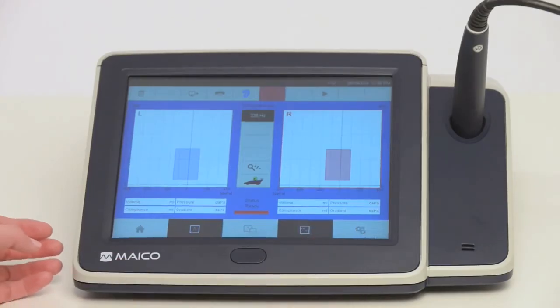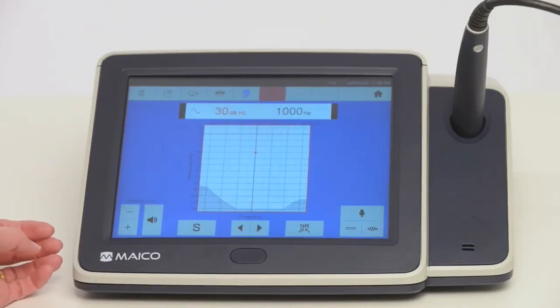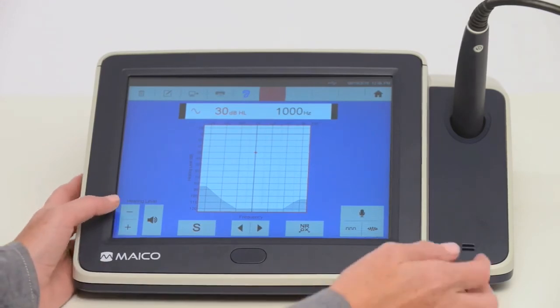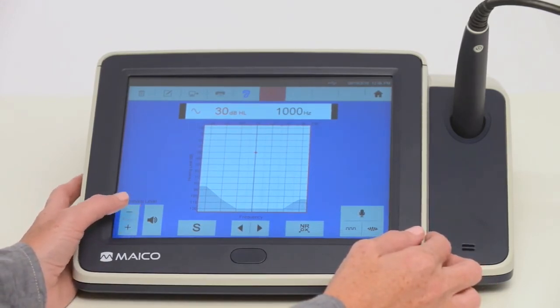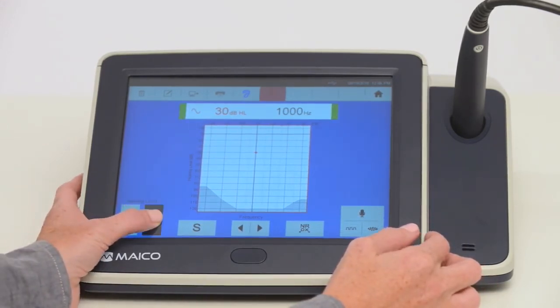Using the touch screen, select audiometry from the bottom row of icons. Select right or left ear. Selection of test frequency is with the frequency arrow buttons. Select the volume with the hearing level arrows. Touch the speaker button to present the tone.